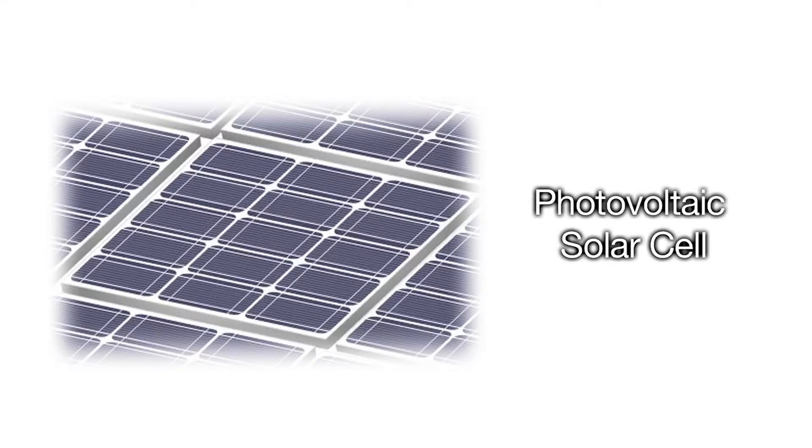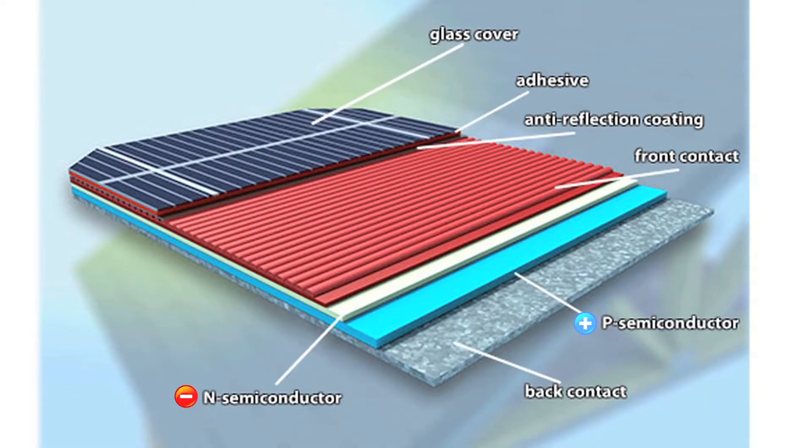Each of these panels is an array of individual photovoltaic cells. Each cell consists of a thin silicon semiconductor wafer that has been treated to form an electrical field, positively charged on one side and negatively on the other.